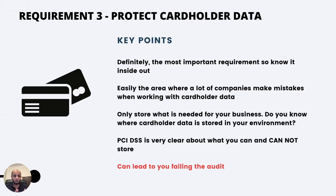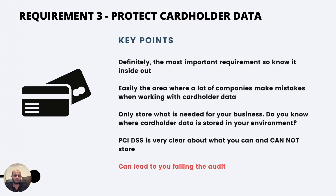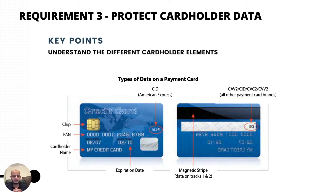PCI DSS is very clear about what you can and cannot store, so you should know what you're storing, where you're storing it, and how. The cardholder data elements include the account number — the PAN, which is the 16-digit number — the cardholder name, expiration date, service code, track 2 magnetic stripe data, and the CVV code used for e-commerce transactions.